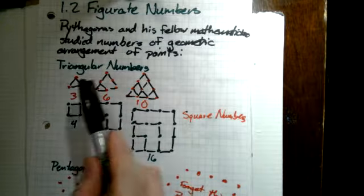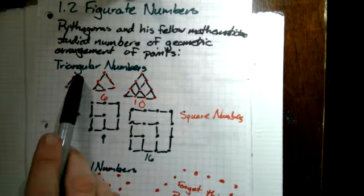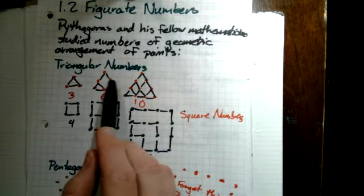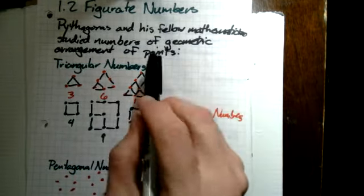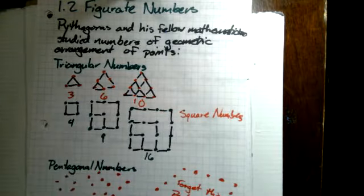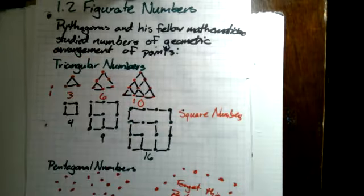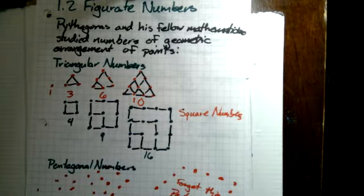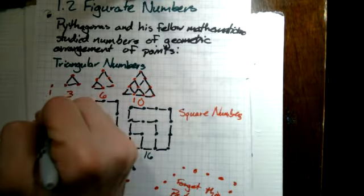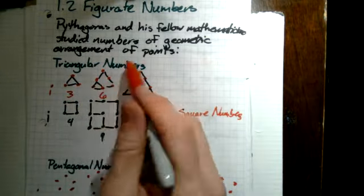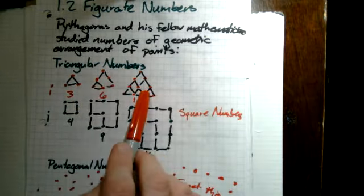For example, we have these triangular numbers here, where the points are all the points on a triangle that includes the previous triangles. Here I messed up a bit, we shouldn't have these and that. But we can start with a point here, which is just one. And the second triangle has three points, the third triangle has six, the fourth has ten.